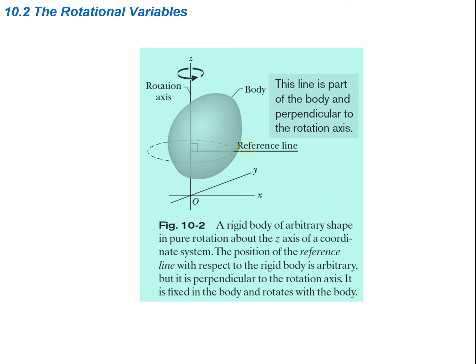The object is going to be rotating around this axis. The position of the reference line with respect to the rigid body is arbitrary, but it's perpendicular to the rotation axis. This reference line is what will be swinging around the circle as the body rotates. The arrow shows the direction of rotation. This reference line is fixed in the body and rotates with the body.